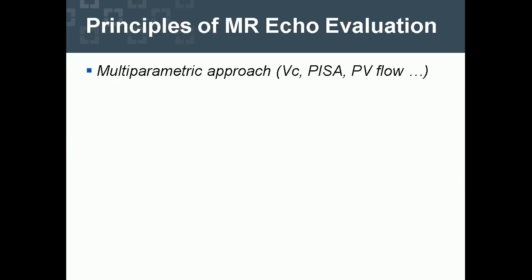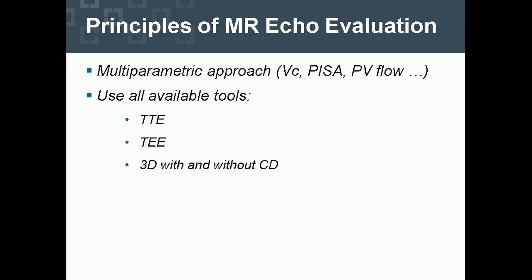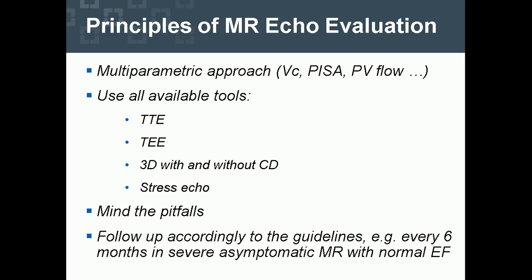Principles of mitral regurgitation echo evaluation: use a multi-parametric approach — vena contracta, PISA, and pulmonary venous flow reversal. Use all available tools: TTE, TEE, color Doppler with 3D, 3D with and without color Doppler, and stress echo. Mind the pitfalls: geometric assumptions, Doppler angle, and Coanda effect. Follow up patients according to guidelines — for example, every 6 months in severe asymptomatic MR with normal ejection fraction.